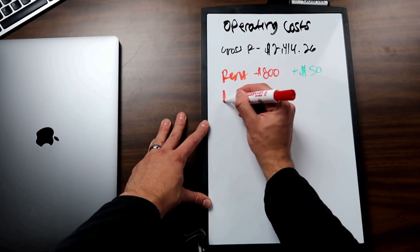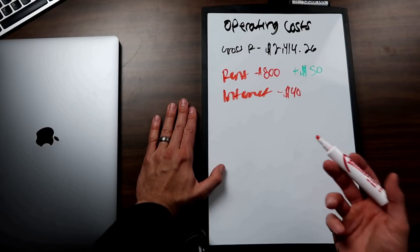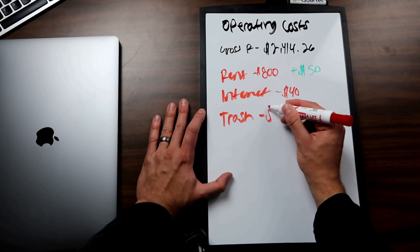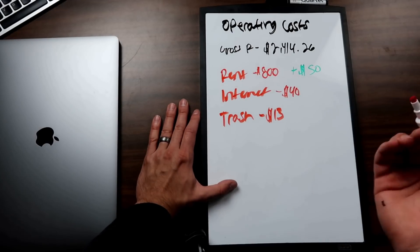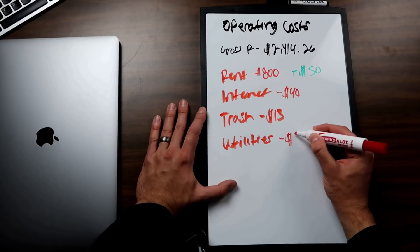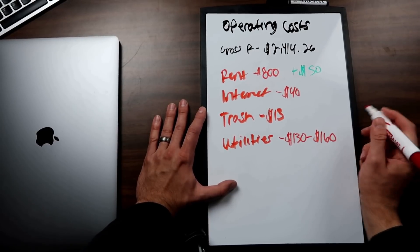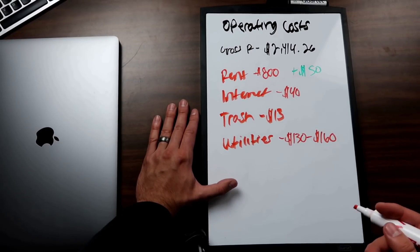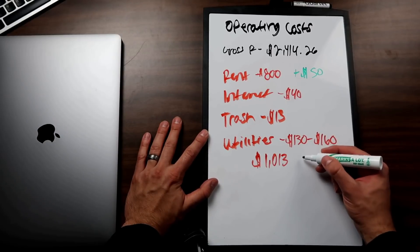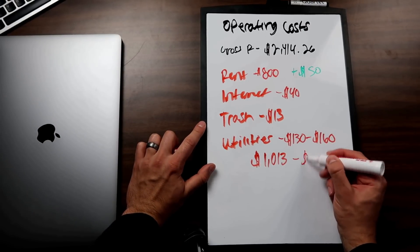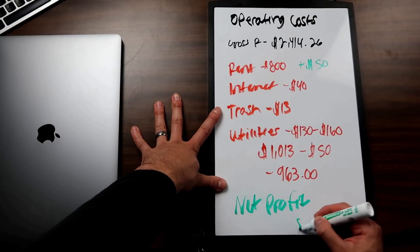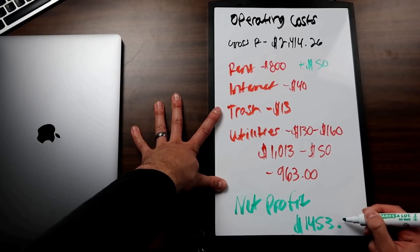I have an internet bill of $40 a month — I use AT&T's smallest plan, and a solid internet connection is an expense you're going to want. Trash service is $13 a month, billed every three months, so $39 every quarter. My utility bill ranges anywhere from $130 in the summer to $160 a month, depending on the guests who stay there. This brings my total monthly expense to $1,013.